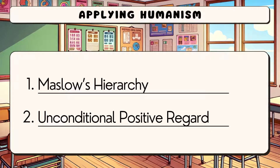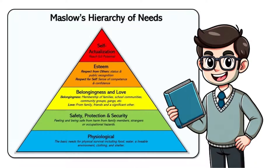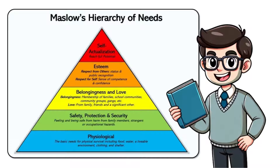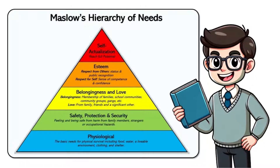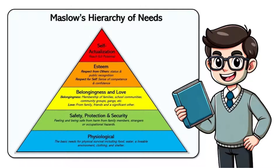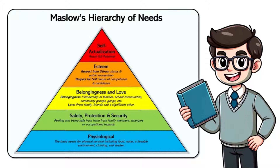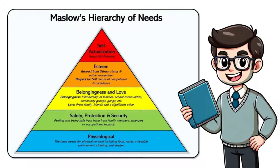So we've looked at the four key pillars. Now let's apply them through two concepts: Maslow's hierarchy of needs and Rogers' unconditional positive regard. Let's start with Maslow's hierarchy. This is a hierarchy that organises human needs into a five-tier pyramid, starting from the most basic physiological needs at the bottom.